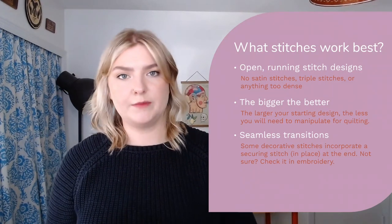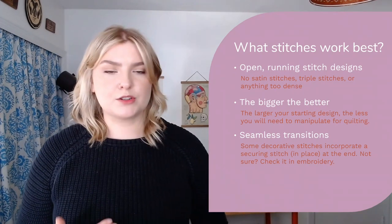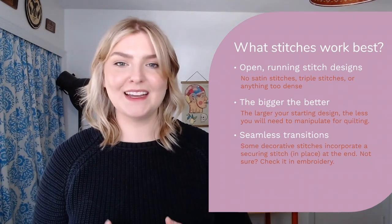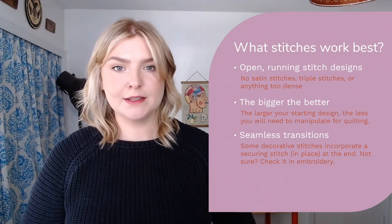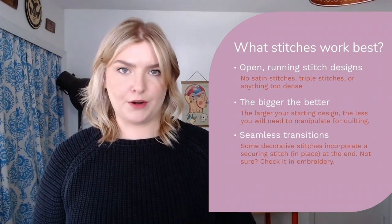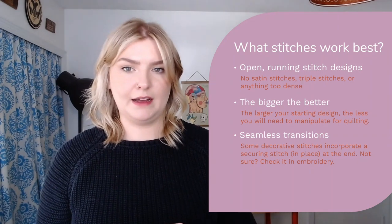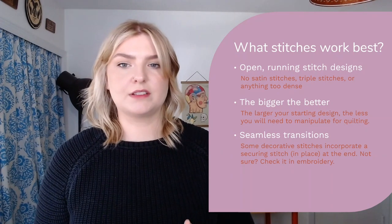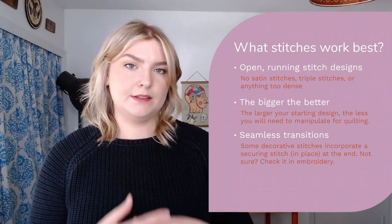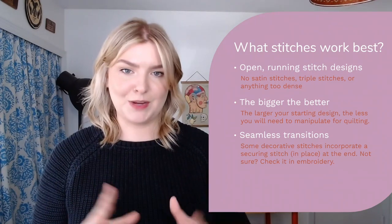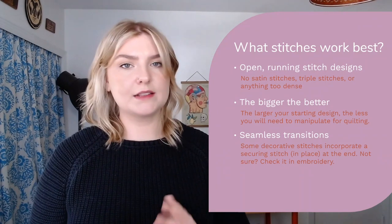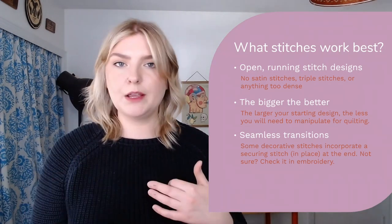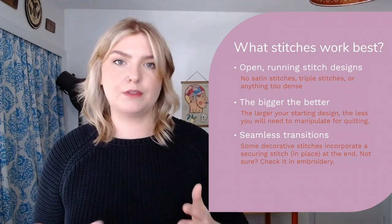You want your decorative stitches to come together seamlessly. This one is unfortunately a little bit trial and error. Some stitches have built-in securing stitches at the end of the stitch pattern, and some of those are more dramatic than others. When we create a row of that decorative stitch in embroidery, those securing stitches can add an obvious point or knot in the middle of my line of quilting. The only way to see this is when your stitch is opened in embroidery — you can zoom in and view stitch by stitch in your stitch pattern and identify these kinds of things.